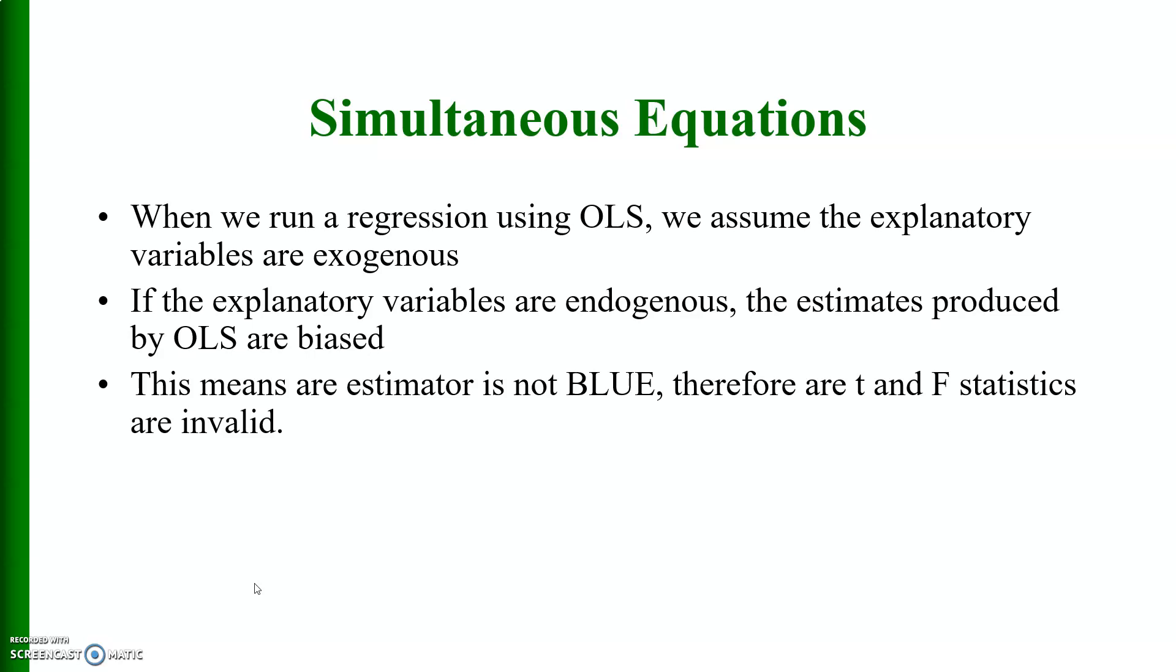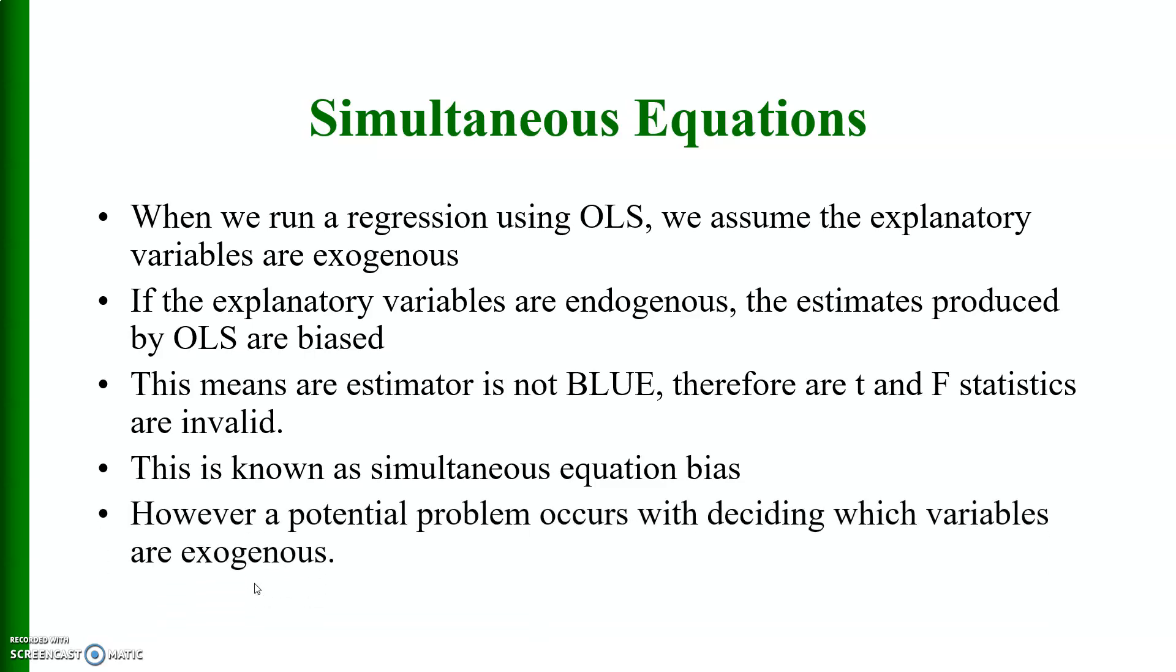Therefore, T and F statistics are invalid and this is known as simultaneous equation bias in econometrics. However, a potential problem occurs with deciding which variables are exogenous.